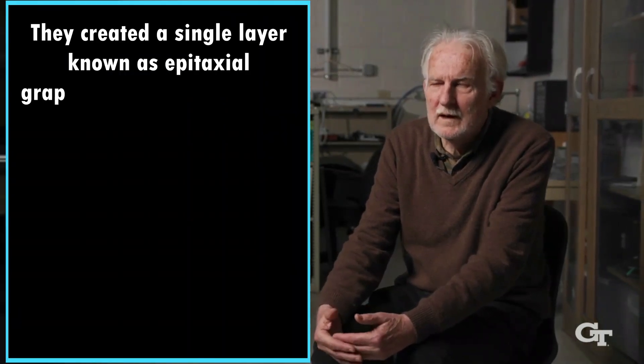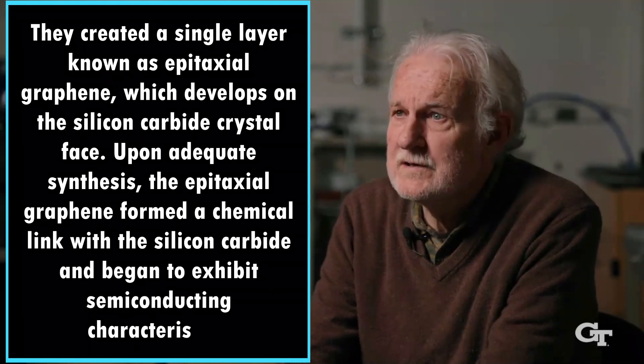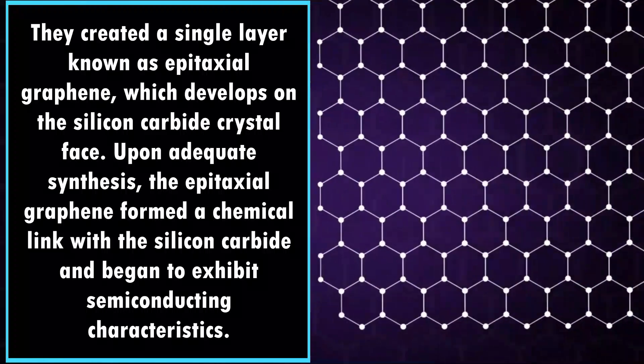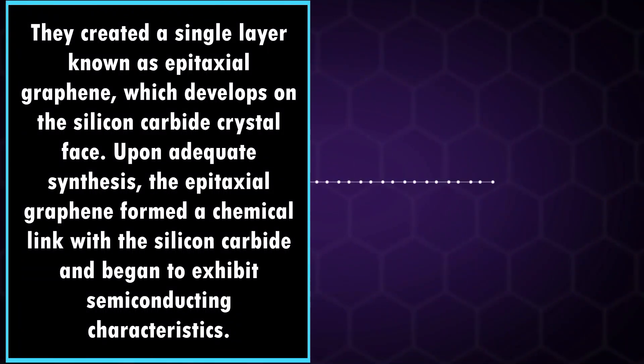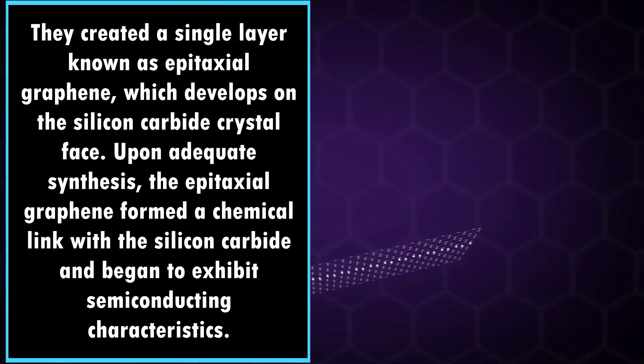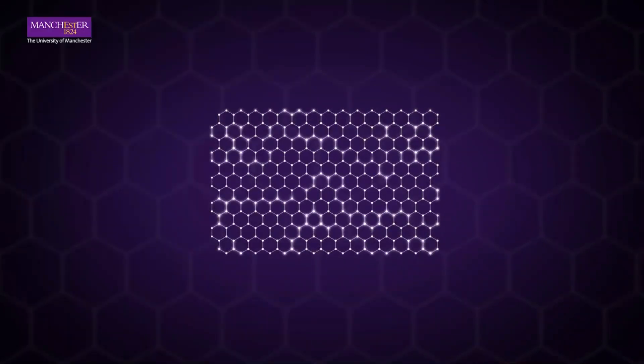They created a single layer known as epitaxial graphene, which develops on silicon carbide crystal phase. The researchers discovered that upon adequate synthesis, the epitaxial graphene formed a chemical link with the silicon carbide and began to exhibit semiconducting characteristics. They continued to refine the material over the next 10 years.